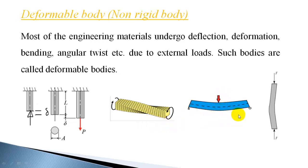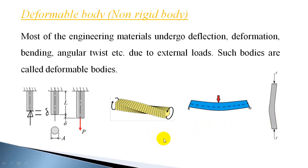A bar supported at both ends and subjected to a central load will bend — if it is deformable, it will undergo bending and there will be a deflection. If a compressive load acts on a long structure, it may even buckle. So buckling is also another kind of deformation. These are a few examples of deformations produced on structural members: deflection, bending, angular twist, etc.